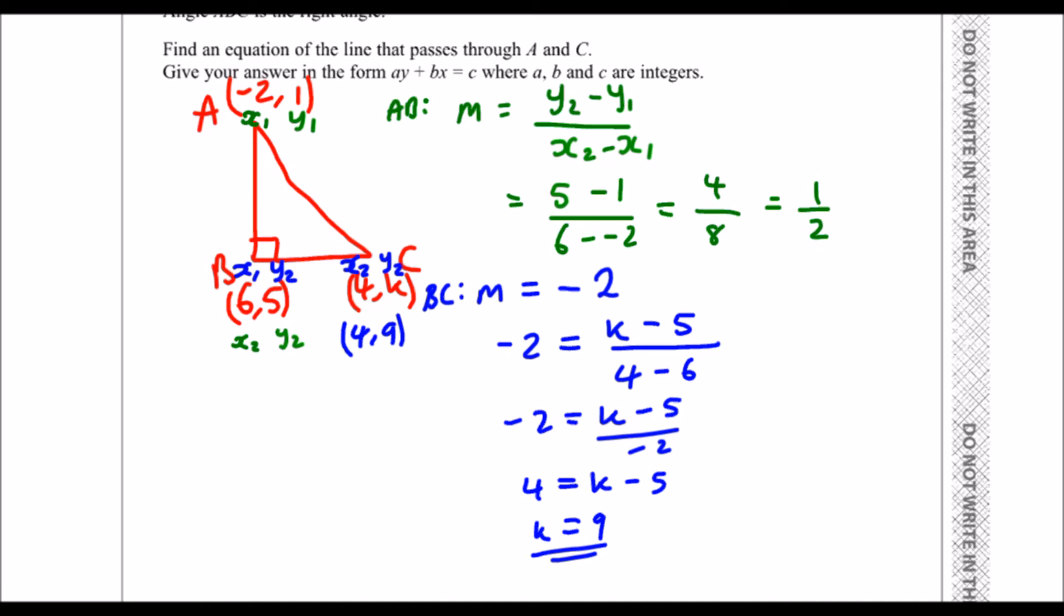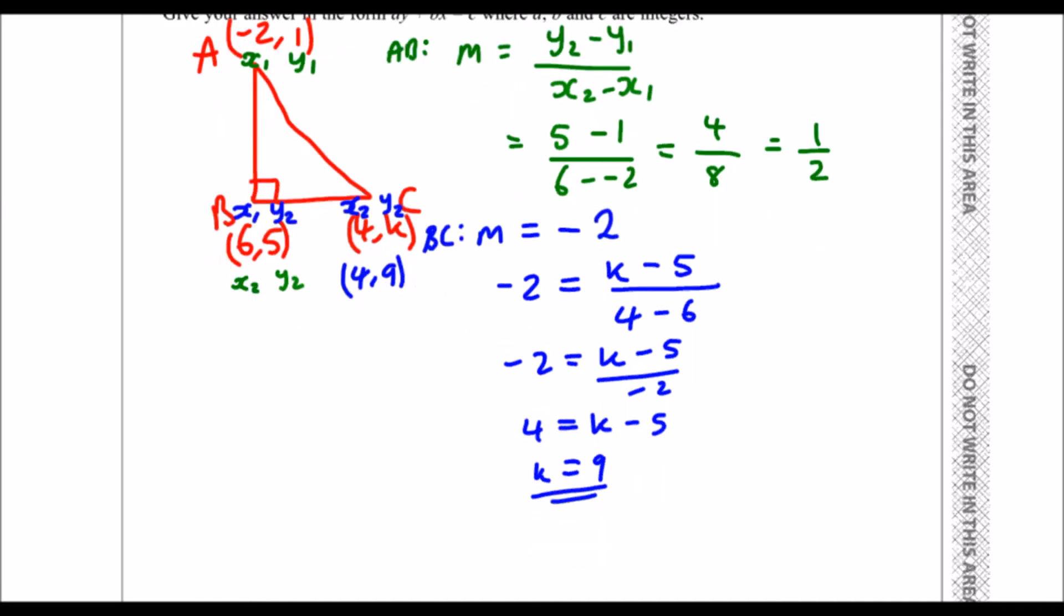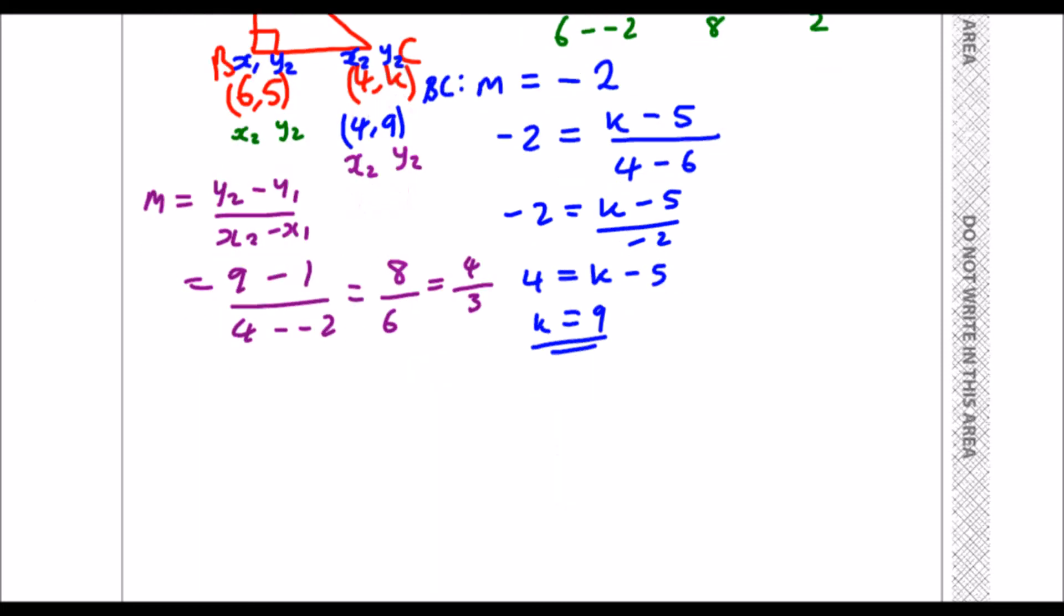Now we're going to work out the equation of A to C. We can use the gradient formula again for the third time. So we'll keep these as X1, Y1. I'll just write it in purple so we know, and this is X2, Y2. So Y2 minus Y1 over X2 minus X1, 9 minus 1 over 4 minus minus 2, which is 8 over 6, which simplifies to 4 thirds.